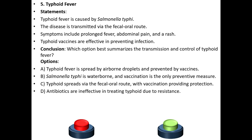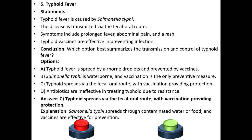Conclusion: Which option best summarizes the transmission and control of typhoid fever? Option A: Typhoid fever is spread by airborne droplets and prevented by vaccines. Option B: Salmonella typhi is waterborne and vaccination is the only preventive measure. Option C: Typhoid spreads via the fecal-oral route with vaccination providing protection. Option D: Antibiotics are ineffective in treating typhoid due to its resistance. The answer is C: Typhoid spreads via the fecal-oral route with vaccination providing protection.